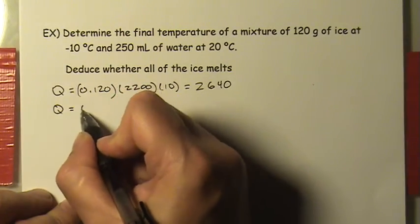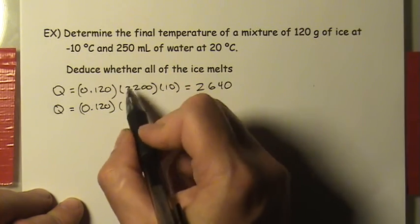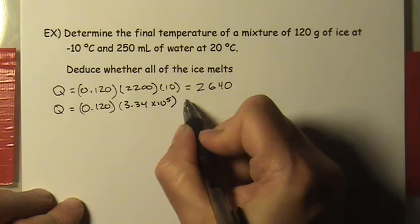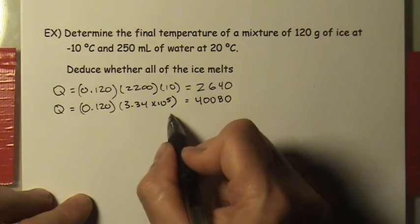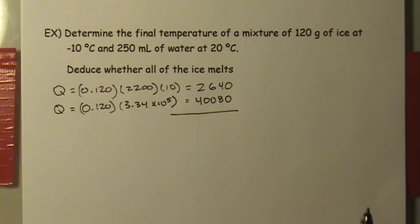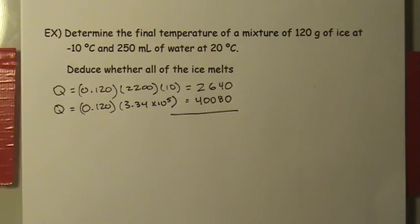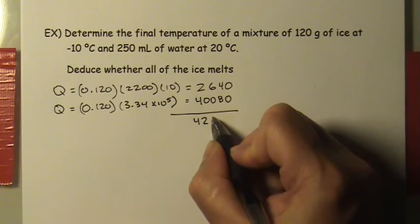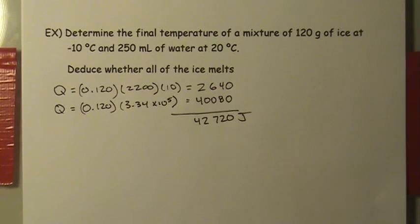If the ice did all melt, the energy required would be: 0.120 kg × 3.34 × 10^5 = 40,080 joules. So the total energy to bring ice to the melting point and then melt it completely is 2,640 + 40,080 = 42,720 joules. At this point the ice would be liquid water at 0°C.